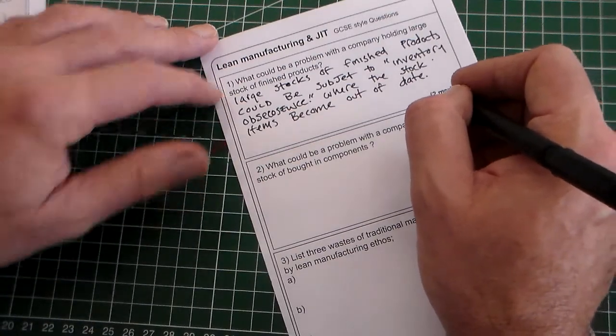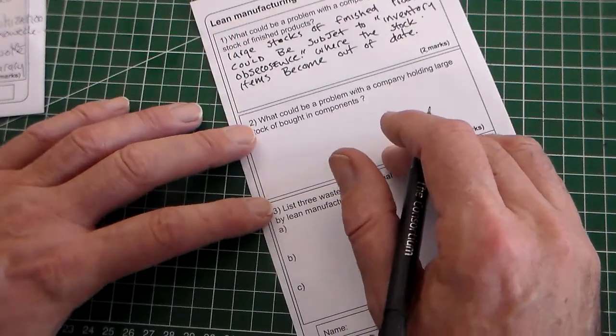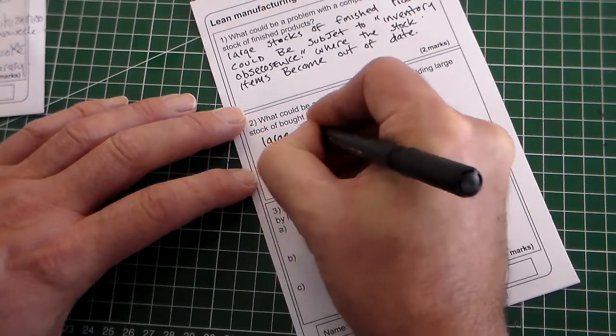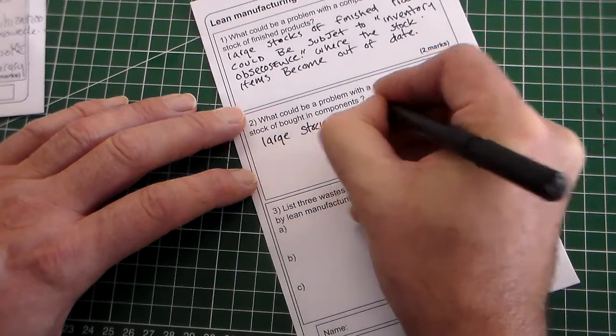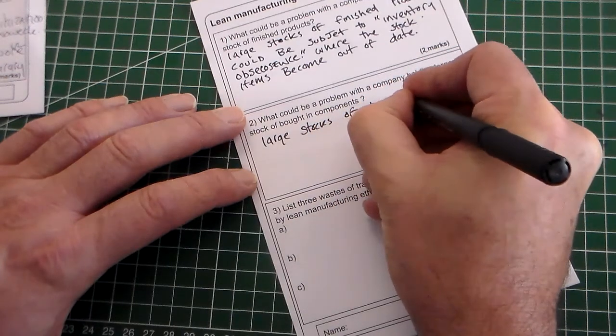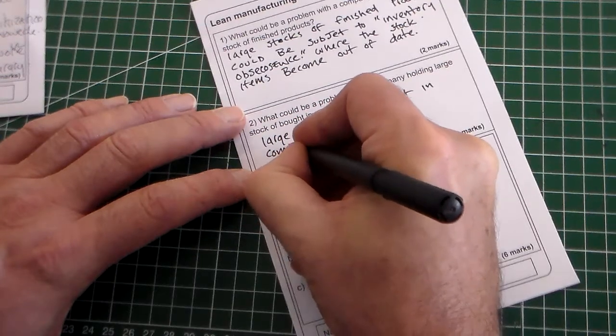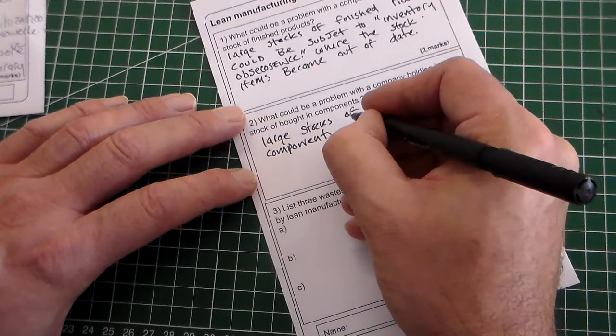What could be a problem with a company holding large stock of bought-in components? So, large stock of bought-in components can use up spare capital.